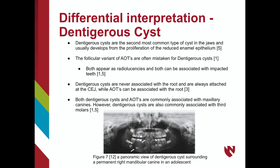Furthermore, AOTs may have internal radiopacities whereas dentigerous cysts are homogeneously radiolucent. If the radiolucent entity is located more apical to the CEJ, a dentigerous cyst can be ruled out. Both dentigerous cysts and AOTs are often associated with maxillary canines; however, dentigerous cysts are also commonly associated with third molars, while AOTs are rarely associated with permanent molars.